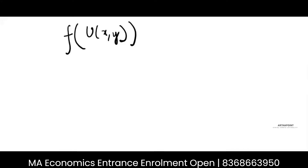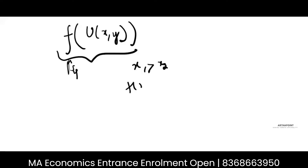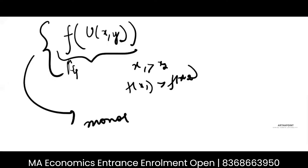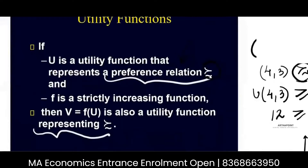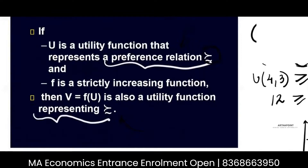I had a utility function u(x, y). I transformed it into f(u(x, y)). The function f can be 4u, or u + 4, or u times 10, or u divided by 2. I transformed this utility function such that f is increasing — meaning if x1 > x2, then f(x1) > f(x2). I did an increasing transformation of the utility function, which is also known as a monotonic transformation. The monotonic transformation of the utility function represents the same preferences; the ranking remains unchanged.